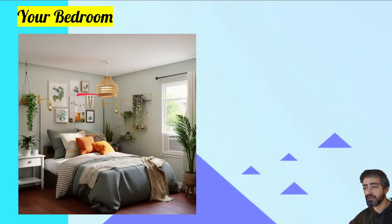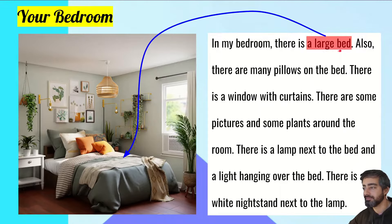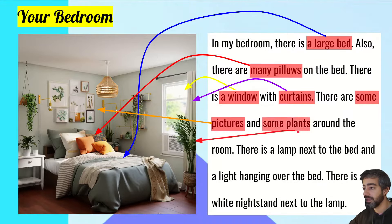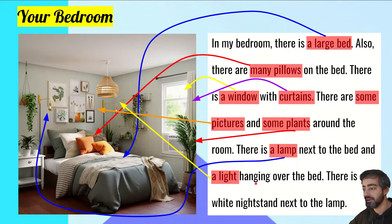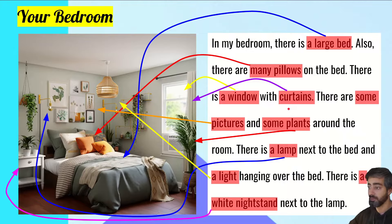I'll give you an example. If I'm describing this room: in my bedroom there is a large bed. Also, there are many pillows on the bed. There is a window with curtains. There are some pictures and some plants around the room. There is a lamp next to the bed and a light hanging over the bed. There is a white nightstand next to the lamp. I've used 'there is' and 'there are,' and I've used vocabulary words to describe what's in the room, and I've told you where these things are by using prepositions.